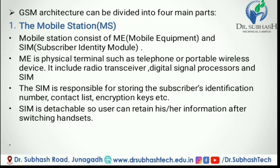GSM architecture can be divided into four main parts. First, the mobile station. Mobile station consists of ME (mobile equipment) and SIM (subscriber identity module). ME is a physical terminal such as a telephone or portable wireless device. It includes a radio transceiver, digital signal processor, and SIM. The SIM is responsible for storing the subscriber identification number, contact list, encryption keys, etc. SIM is detachable so a user can retain his or her information after switching handsets.